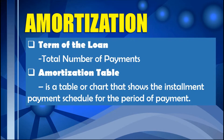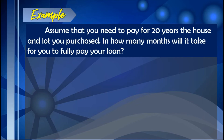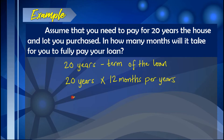The amortization table is a chart that shows the installment payment schedule for the period of payment, detailing how much each payment goes to interest and how much goes to principal. For example, assume you need to pay for 20 years. To find how many months that is, we multiply 20 years by 12 months per year, giving us 240 monthly payments needed to fully pay your mortgage loan.